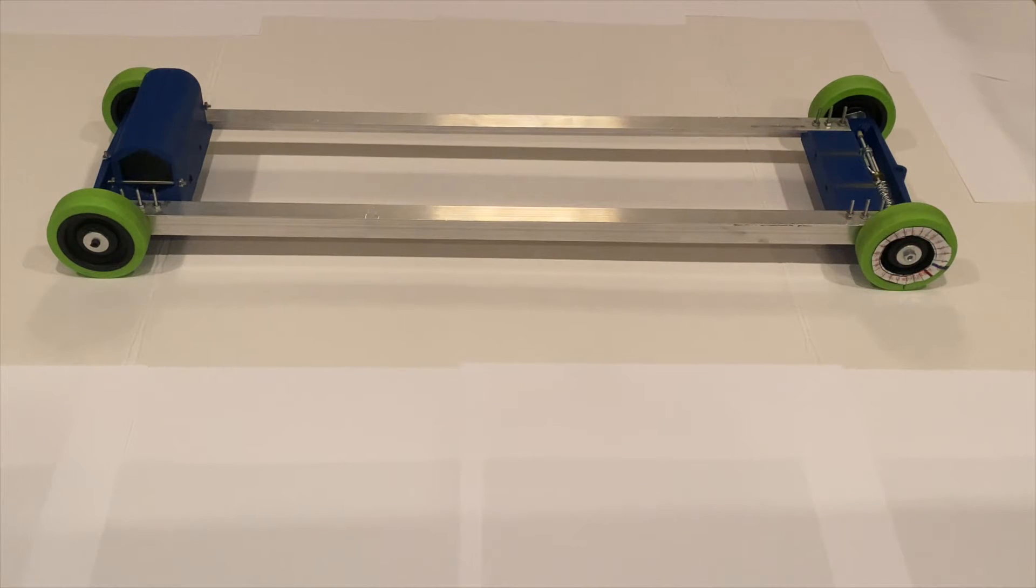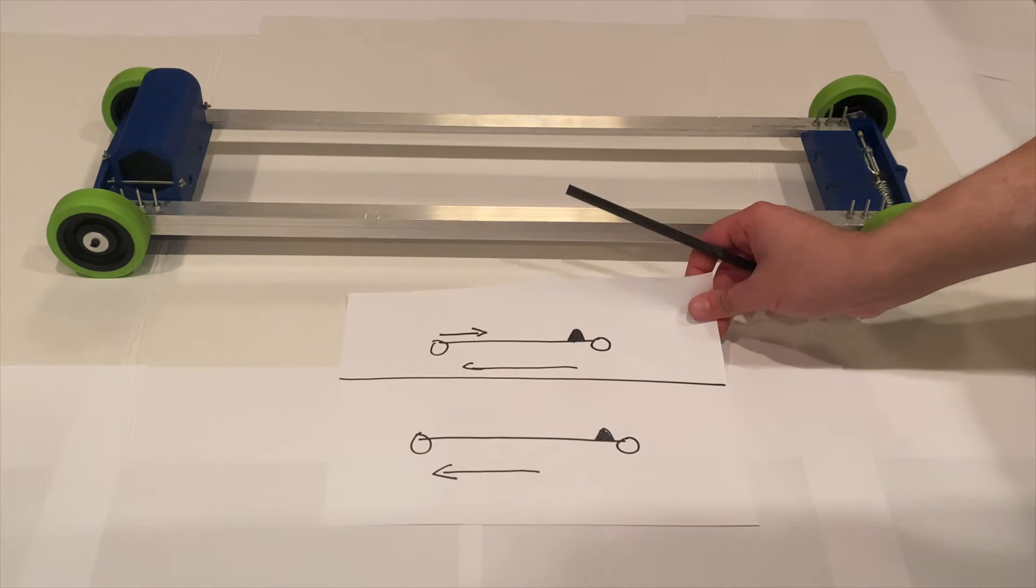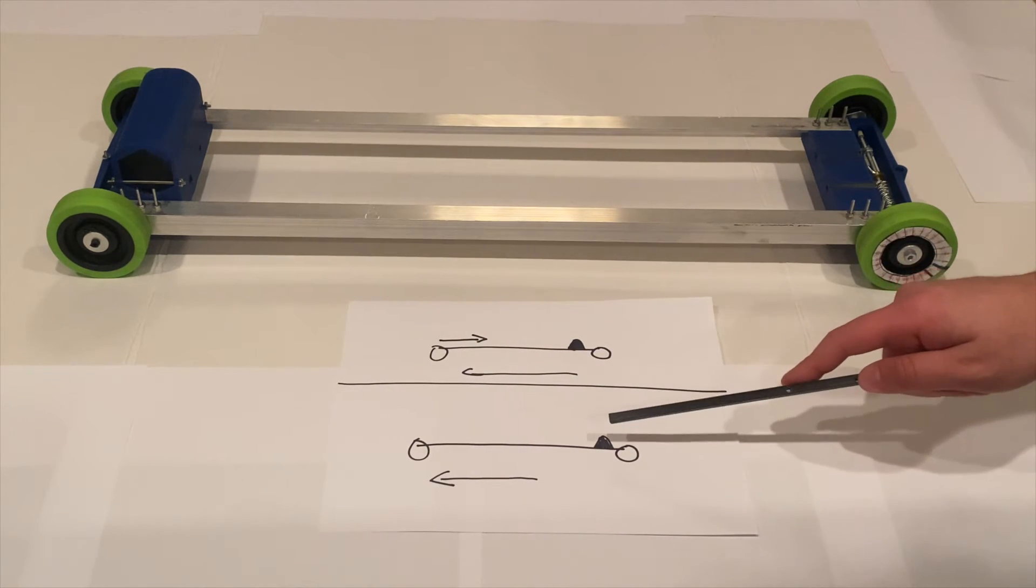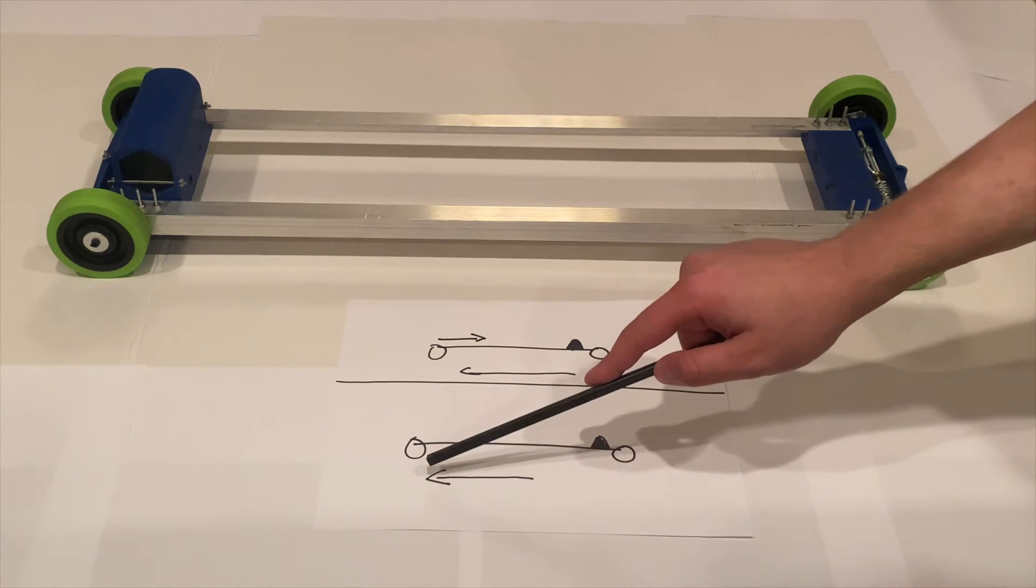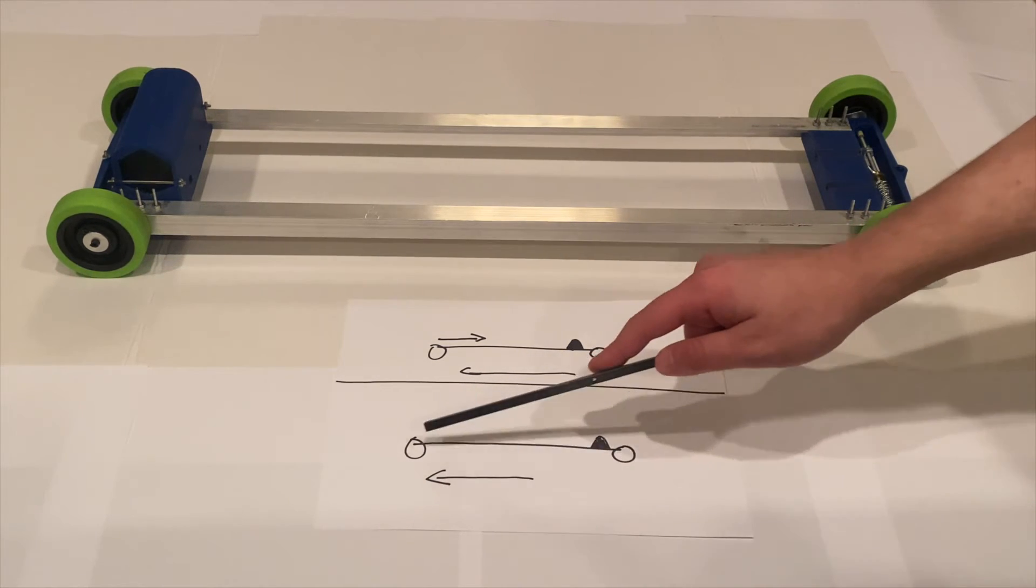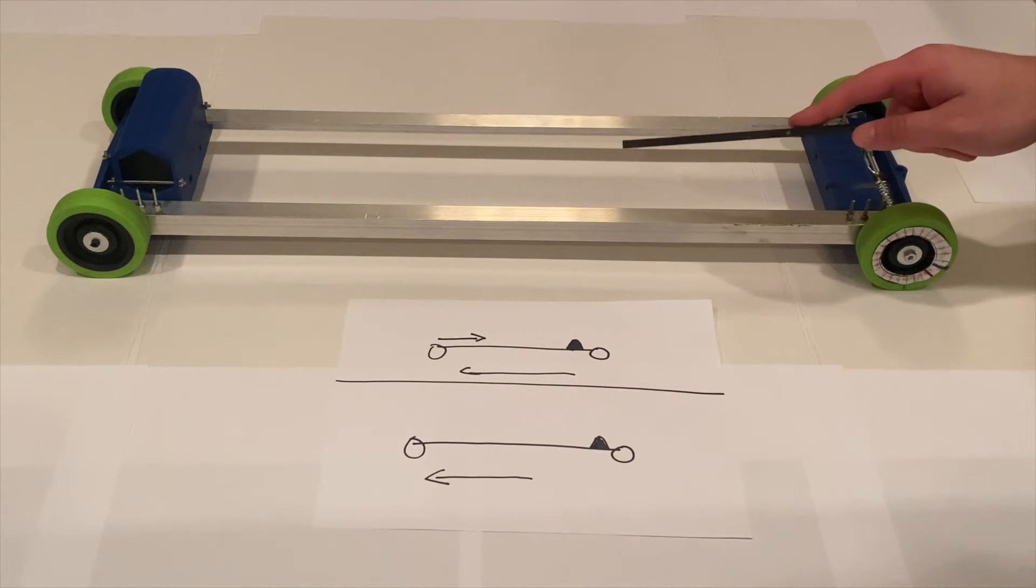Alright guys, so the third and final quick and easy tip that you can use to improve your gravity vehicle is to simply add a decelerator onto your vehicle. Now, the reason you want to do this is without a decelerator, when your vehicle comes to a complete stop, your vehicle has to overcome the entire amount of kinetic energy that your car has left that's allowing it to go forward.